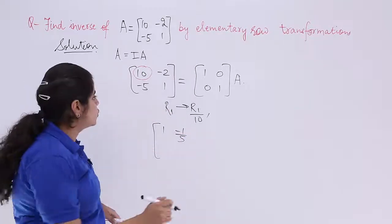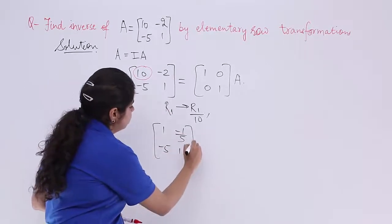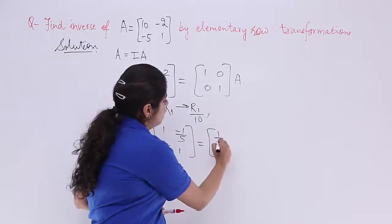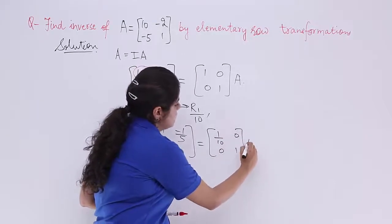Next, R2 does not change so it is minus 5 and 1. Next, we have the another matrix. It is 1 by 10, 0, 0, 1 and it is A.